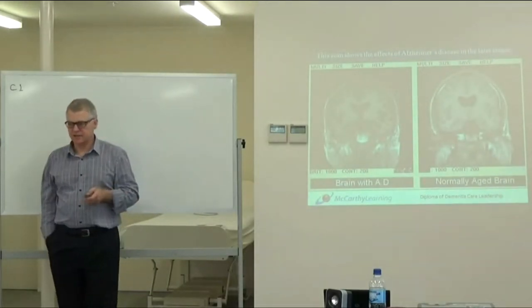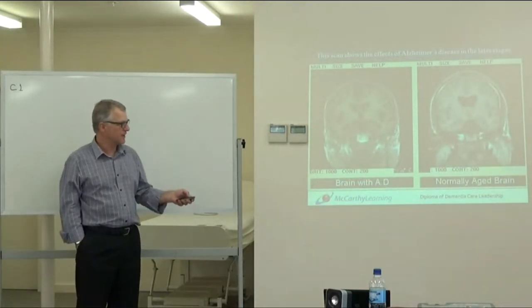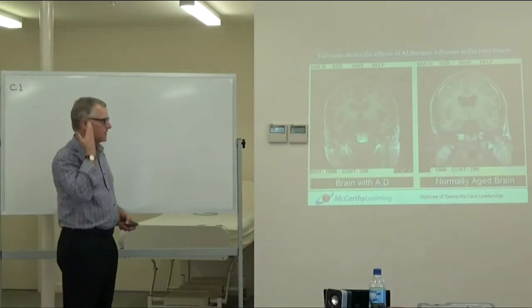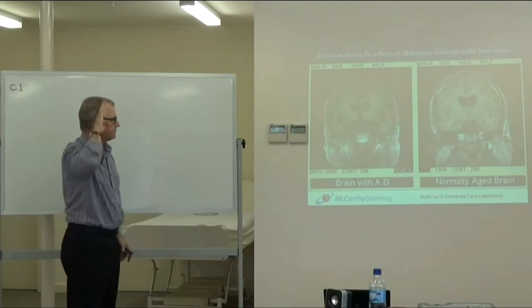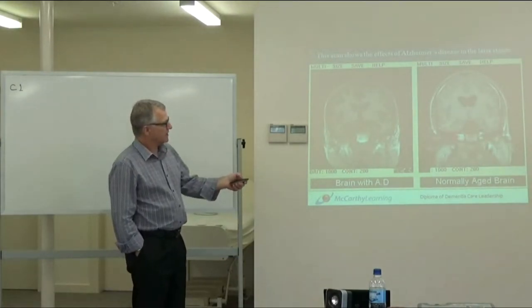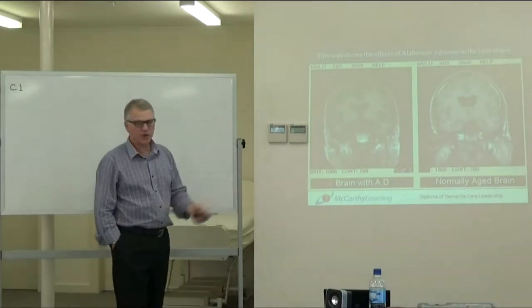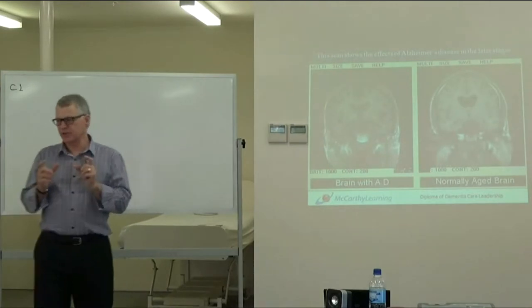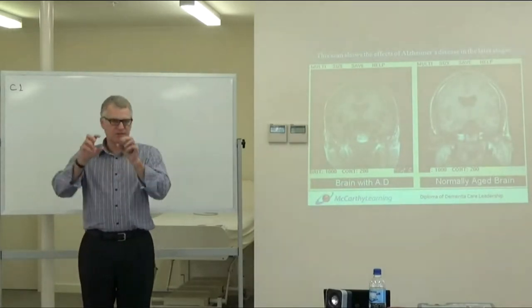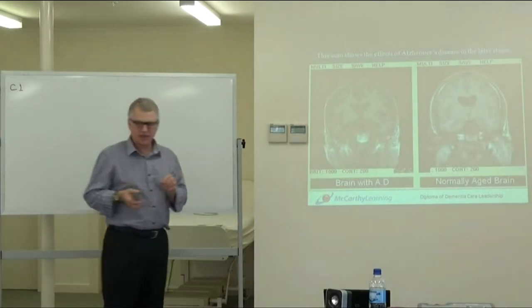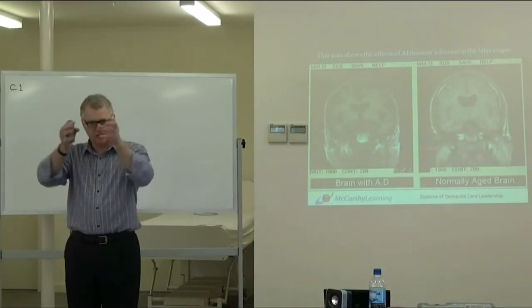Here we see two scans. On the right hand side, the normally aged brain is very full in the skull cavity. This is a CT scan slice through the brain vertically. The brain is very full with lots of white matter in the centre, surrounded by a layer of grey matter where most of the cell bodies reside. The cortex is the 4 to 6 millimeter layer of tissue surrounding the brain.